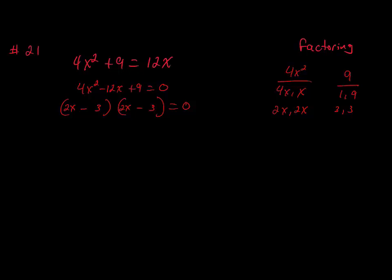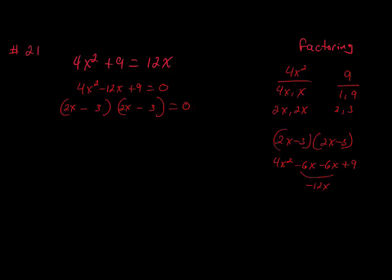So using FOIL: 2x times 2x is 4x squared. 2x times negative 3 is negative 6x. Negative 3 times 2x is negative 6x. And negative 3 times negative 3 is positive 9. That gives us negative 12x, which is what we had. So we have a double root: 2x minus 3 times 2x minus 3. We set both equal to 0, and we know we're going to get the same solution.